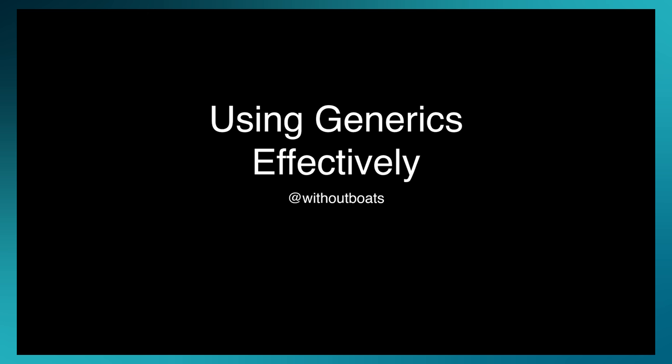I guess right now I'm without boats as long as I'm on this stage. Names are hard. So this talk is about Rust's generic system — traits and type parameters — and how you can use those features when you're writing code.